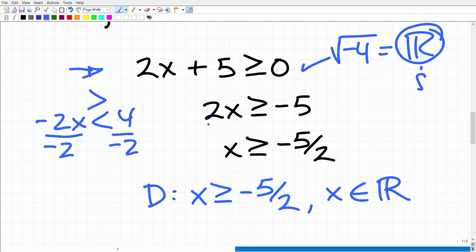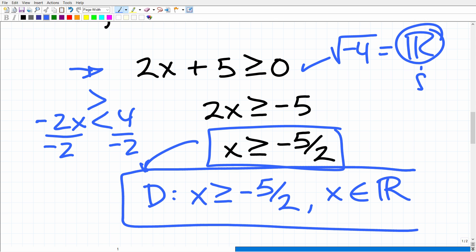All right, so all I need to do here is divide both sides of the inequality by 2 and get all x's that are greater than or equal to negative 5 halves. All right, so again, there's different ways we can express this answer. So we can say the domain is all x's greater than or equal to negative 5 halves, where x is an element or a member of the real number system.